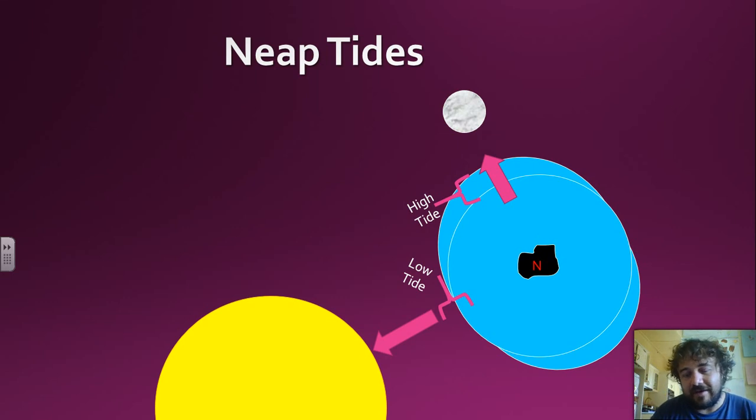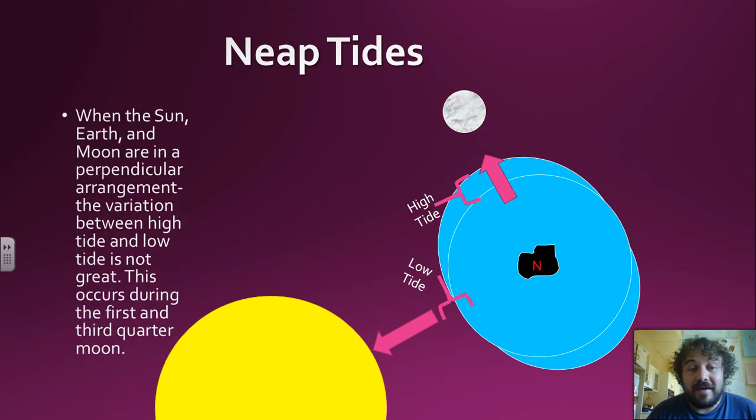Now basically, when the Sun and the Moon are perpendicular, which means like that, at right angles, the variation—like I said, the difference in High Tide and Low Tide—is not as great.